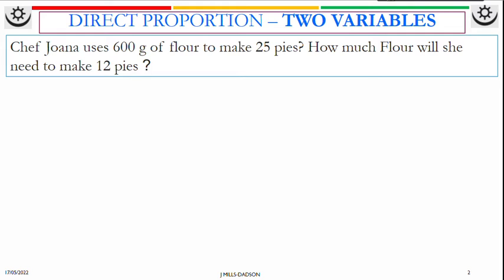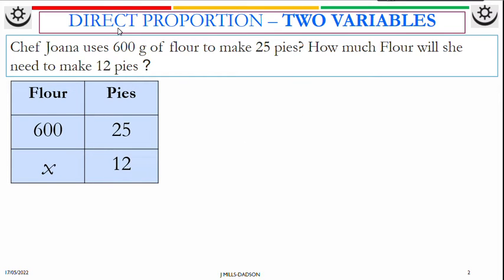So just put it into a simple table. We're talking about flour and pies. First is 600 and 25 pies. The next one is, we're making 12 pies, but we don't know the number of flour. So just replace that with a letter x, y, whatever. So I prefer to use x.